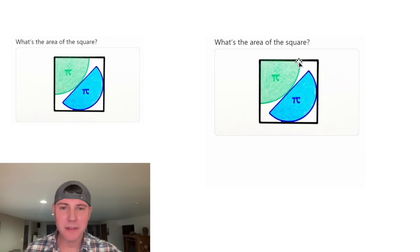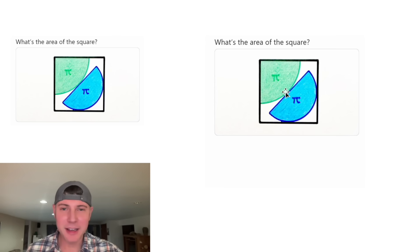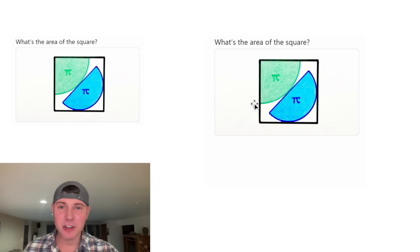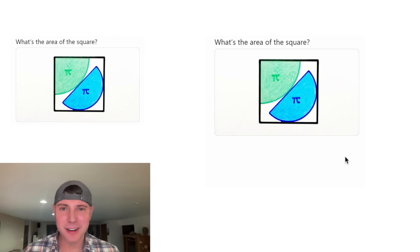Hey guys, this looks like a fun one. We're given a square with a quarter circle with an area of pi and a semicircle with an area of pi. And it wants to know what is the area of this square.